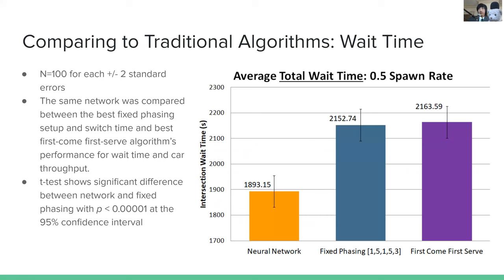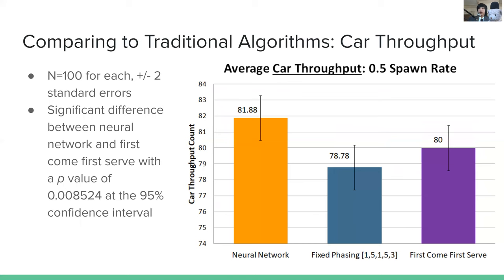We compared the best neural network after 100 generations of evolution to the best-case scenario for both fixed phasing and first-come-first-serve at their respective optimal phase switching times. The neural network achieves about a 12% reduction in total wait time over the next best, which is fixed phasing, and this is statistically significant using a t-test at the 95% confidence interval. Car throughput improved by approximately 2% over the next best — first-come-first-serve — which had about 80 cars in the 200-second frame, while the neural network achieved close to 82.